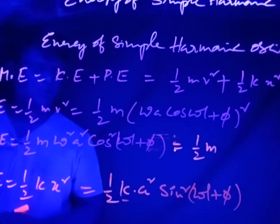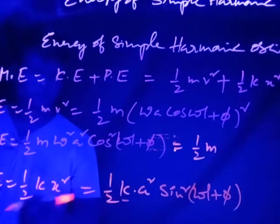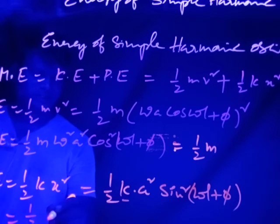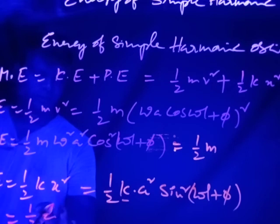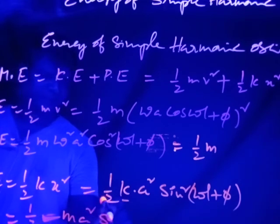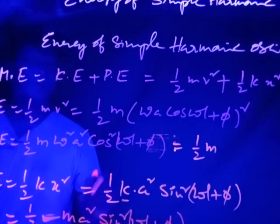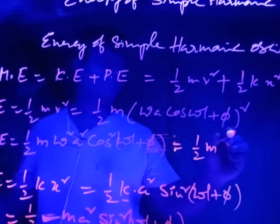Using k = mω², the potential energy becomes PE = ½·m·ω²·A²sin²(ωt + π). This is the final form of the potential energy expression.